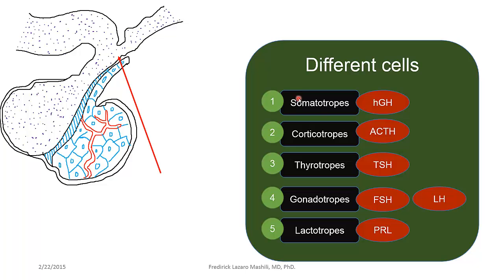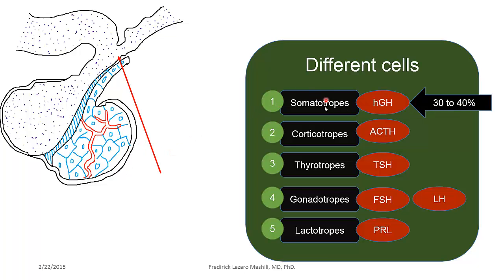The anterior pituitary is made up of different cell types. We have somatotropes, which produce human growth hormone. Another population of cells is corticotrophs, which produce adrenocorticotrophic hormone (ACTH). We have thyrotropes, which produce thyroid-stimulating hormone, and gonadotropes producing follicle-stimulating hormone and luteinizing hormone, and lactotropes producing prolactin. Importantly, 30 to 40 percent of the cells of the anterior pituitary are somatotropes, making them the majority, with about 20 percent corticotrophs.